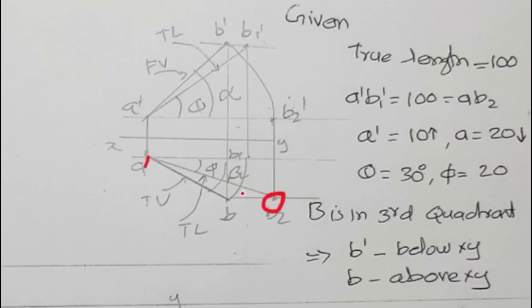A-B2 is 100mm, and A-B2 is at 20 degrees with the XY line. This gives us the second auxiliary view for the 20-degree inclination with VP.